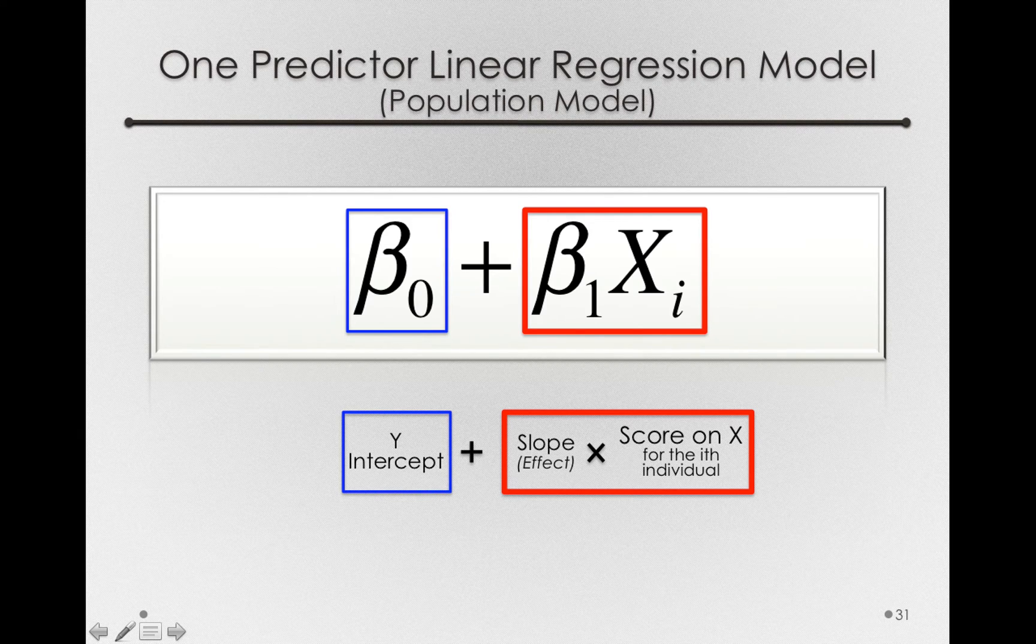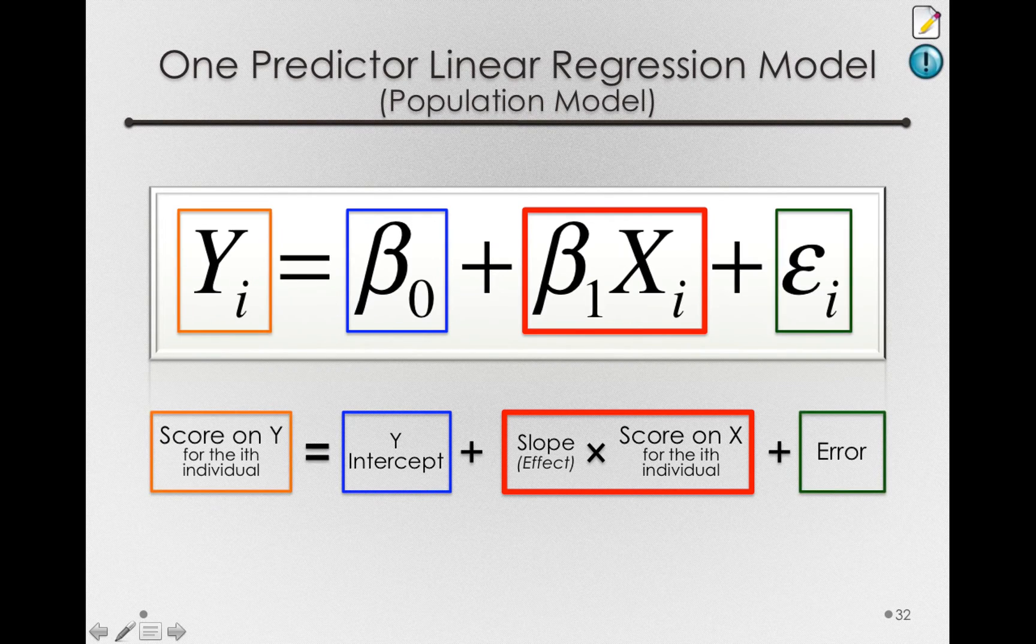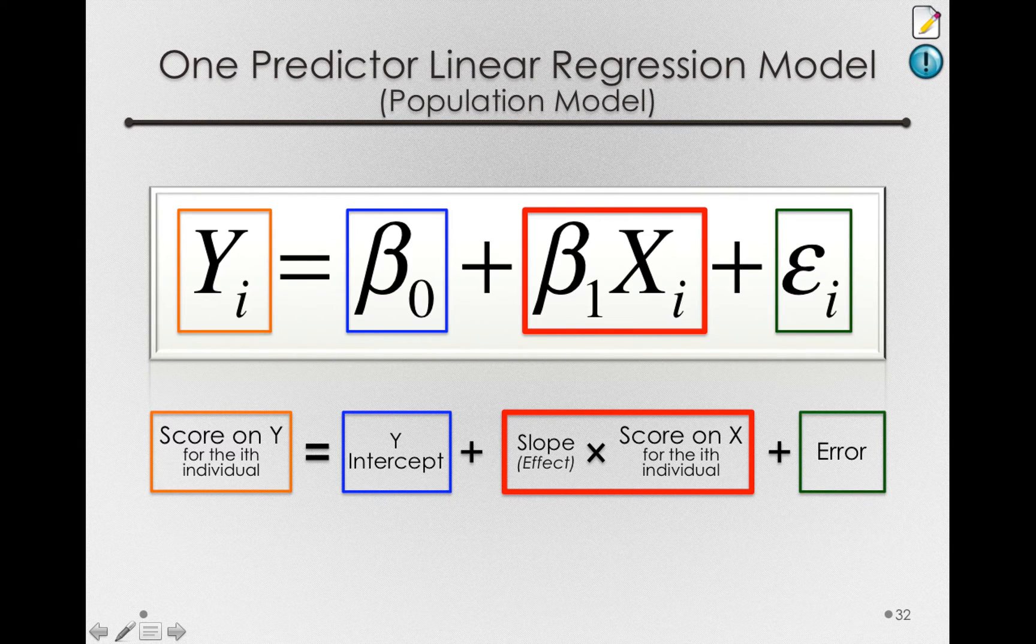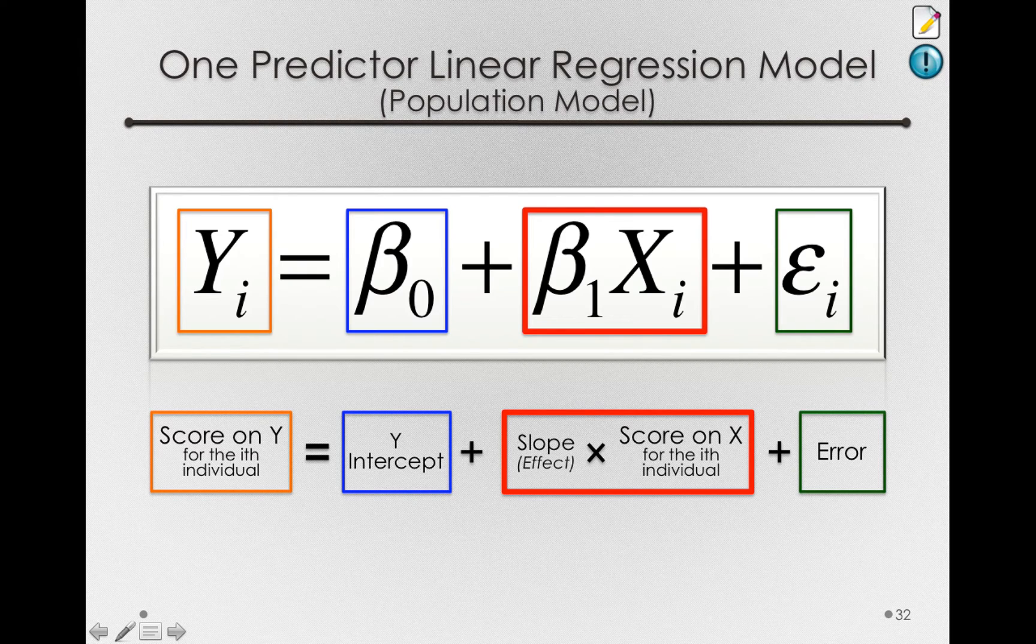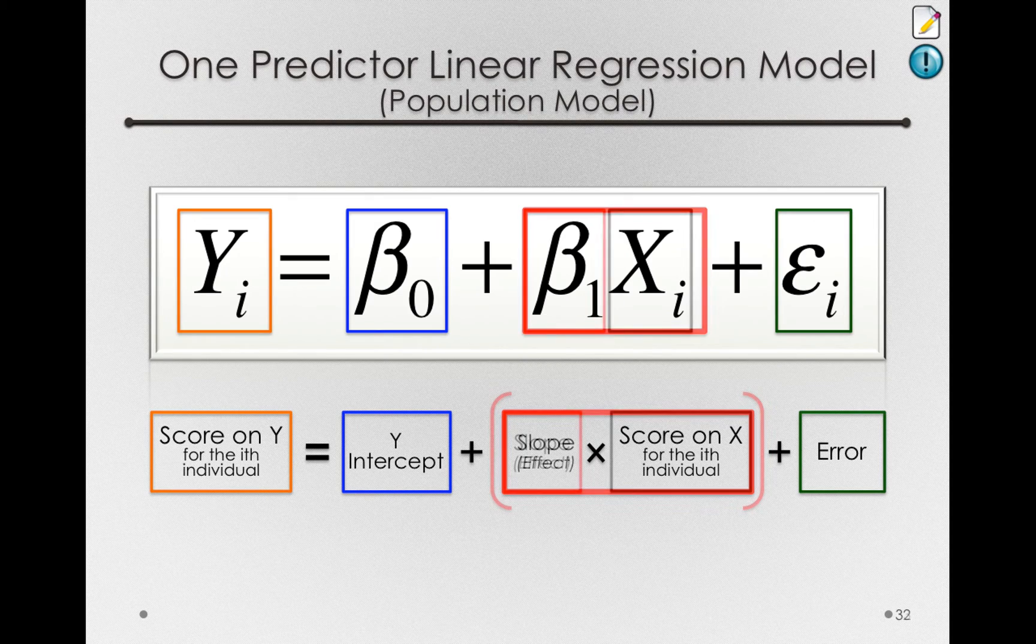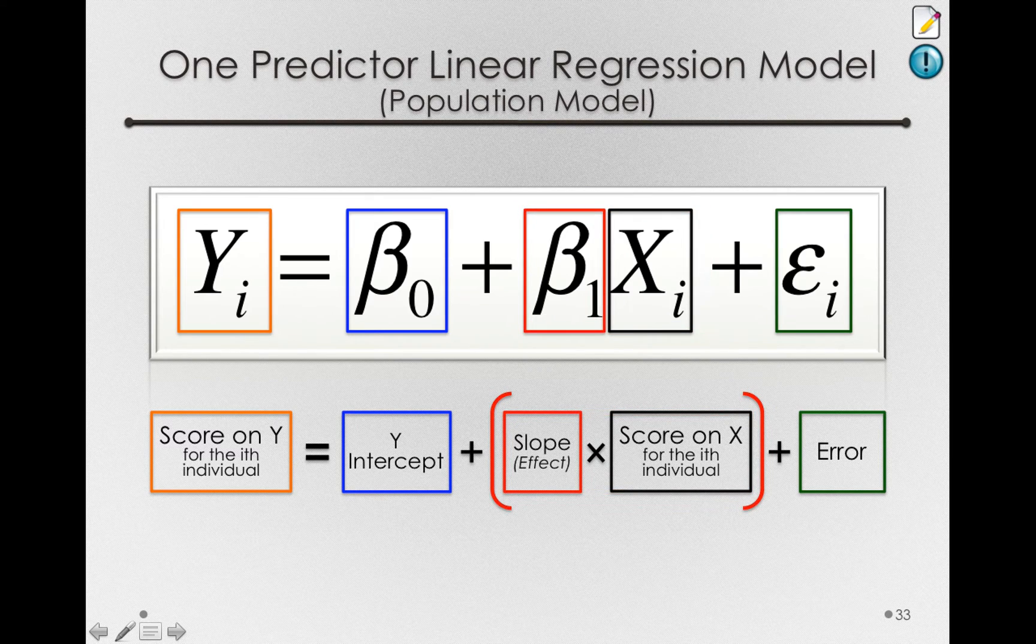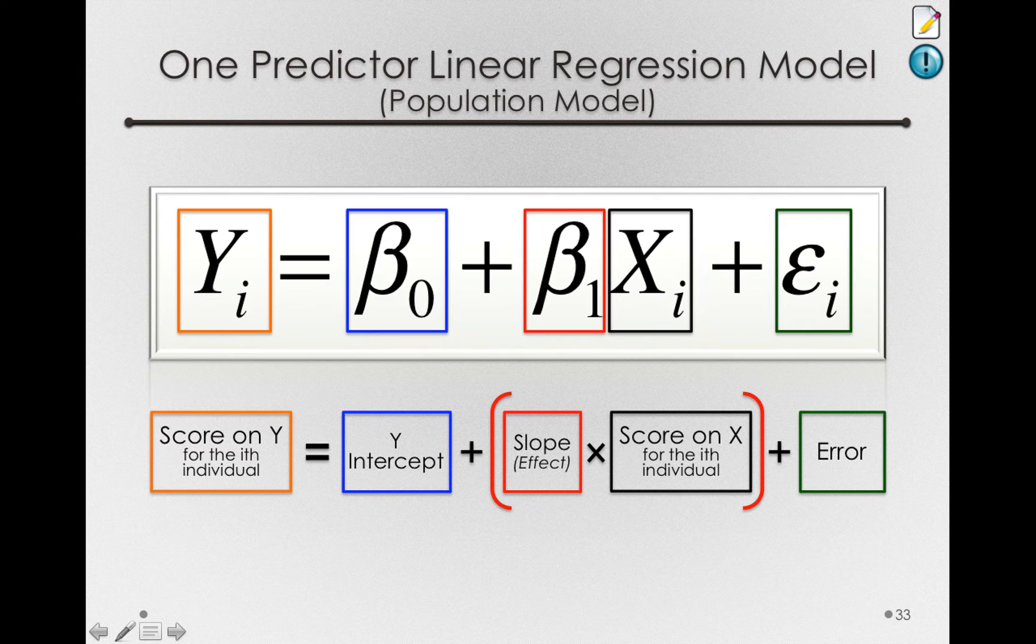Finally, our model will have the final two components: the score on y, on the left-hand side, and individual error, the degree to which individuals differ from whatever is predicted by the model. Let me break out this red section so we have two separate components. First, the effect in our model, beta 1, and the score on x for the i-th individual.